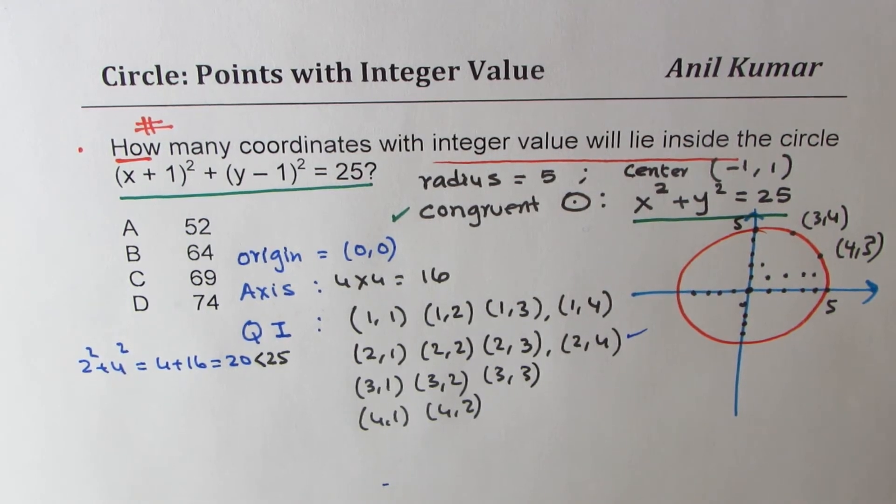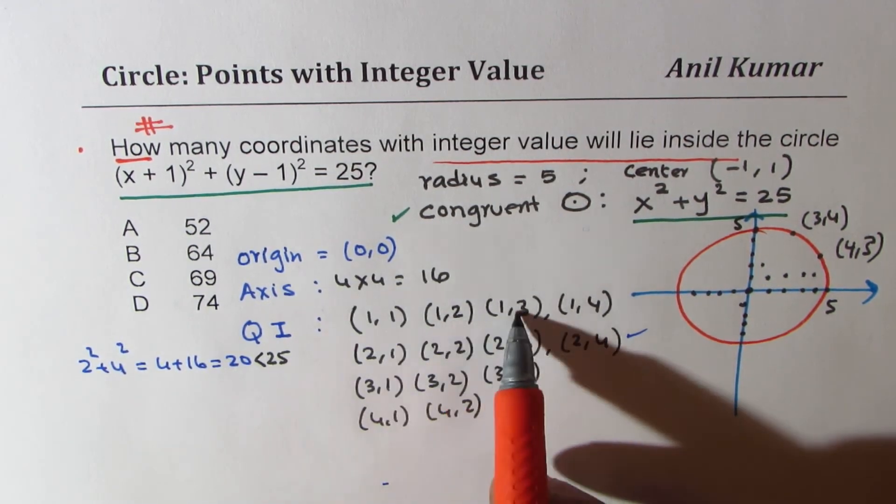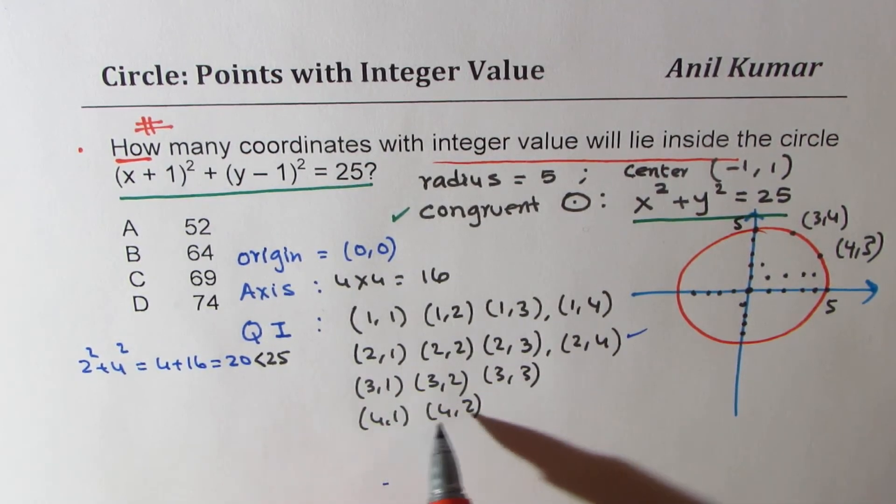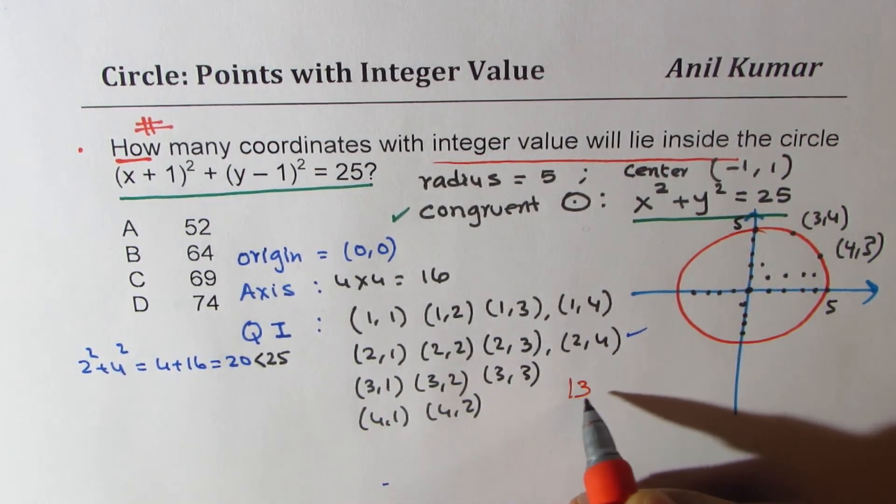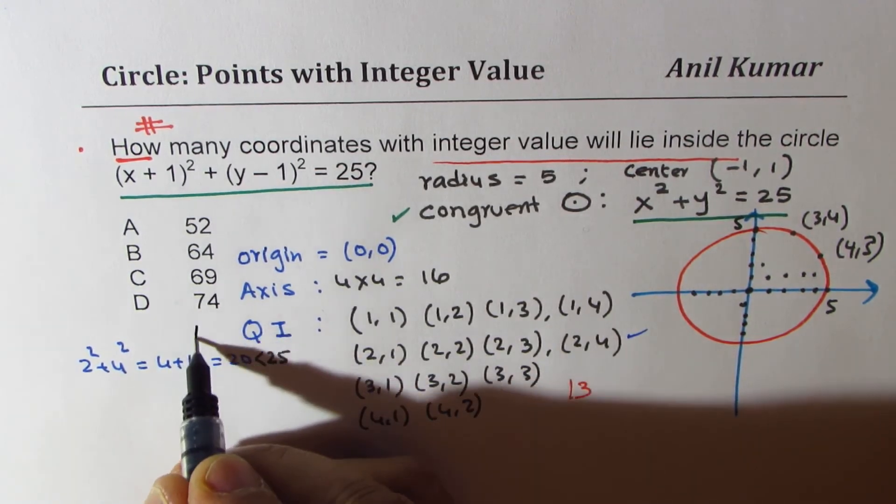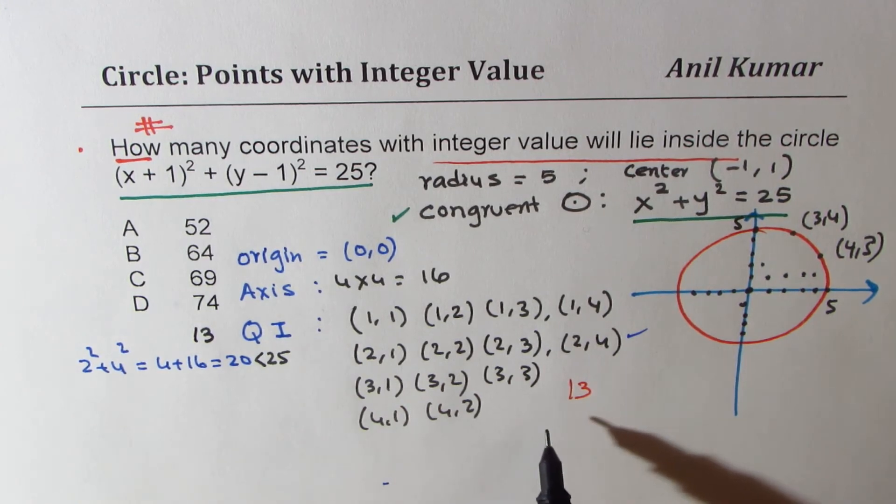We can just count. So it is 1, 2, 3, 4, 5, 6, 7, 8, 9, 10, 11, 12, 13. So we have 13 points in quadrant 1. So in quadrant 1, we get 13 points. So how about all 4 quadrants?